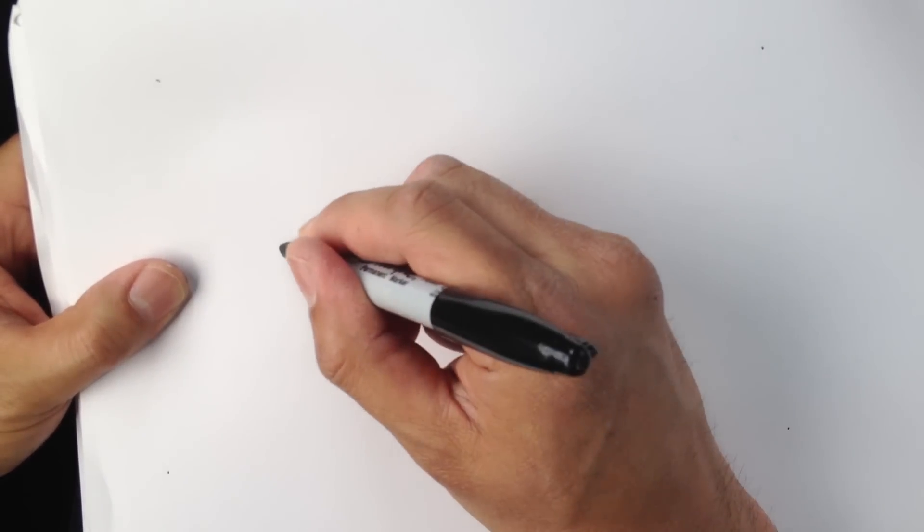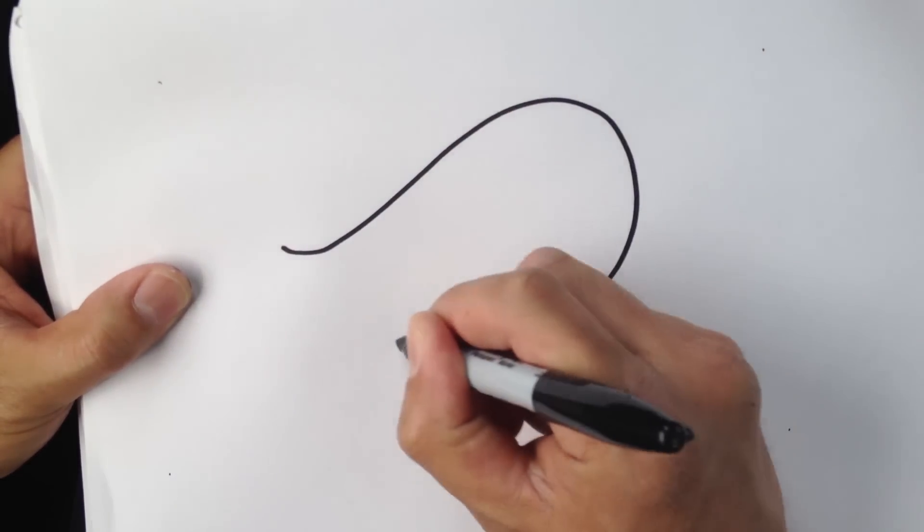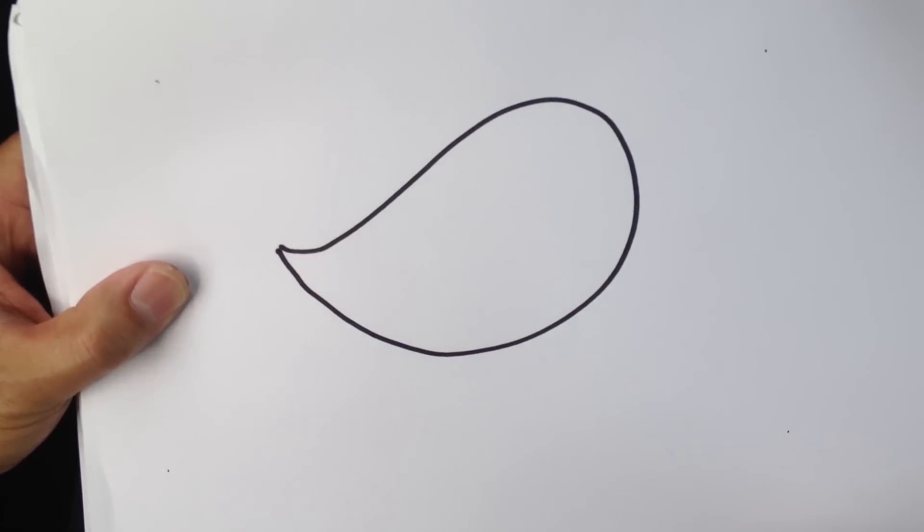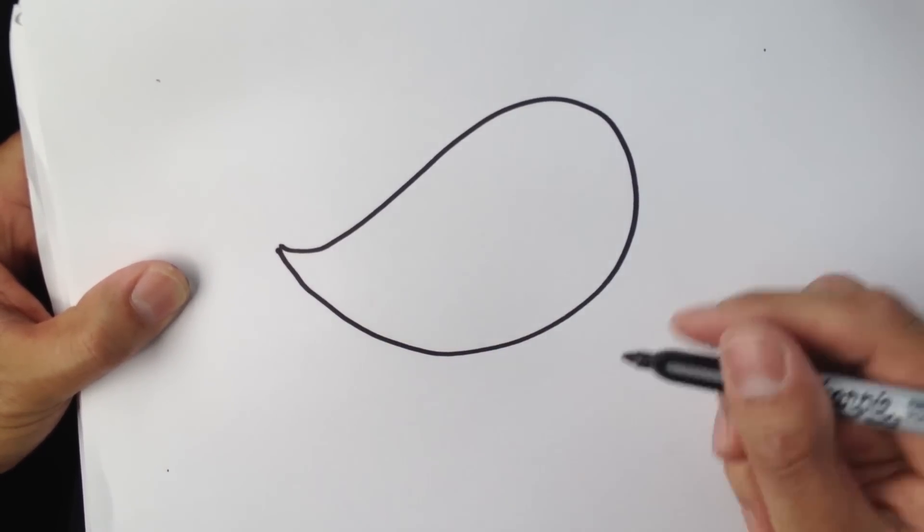We're going to go from the tail all the way through the head and back to the tail again. Starting here, go up and back up. A very simple basic shape, kind of looks like a teardrop, right?